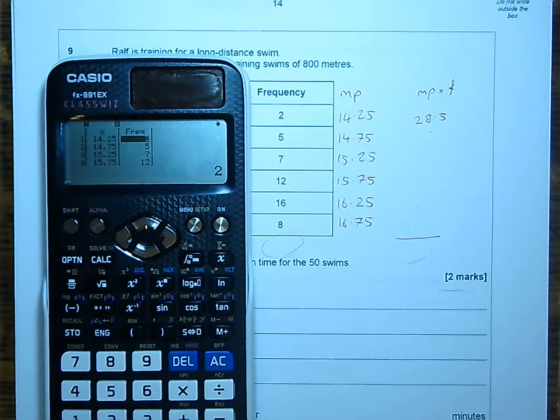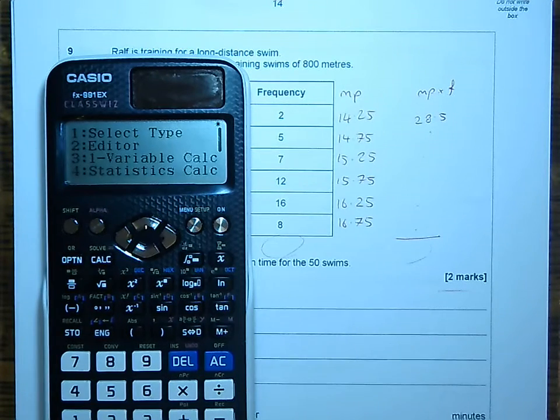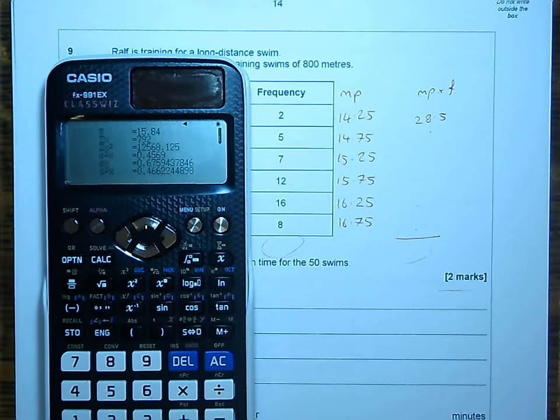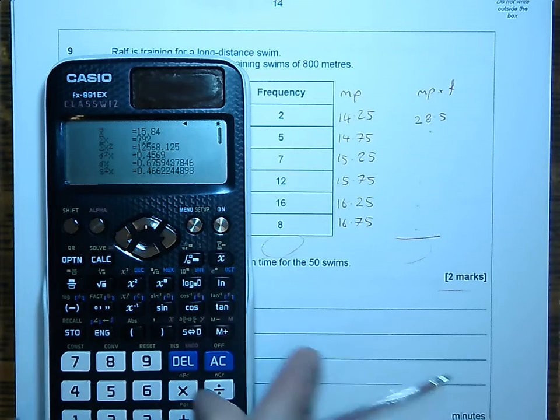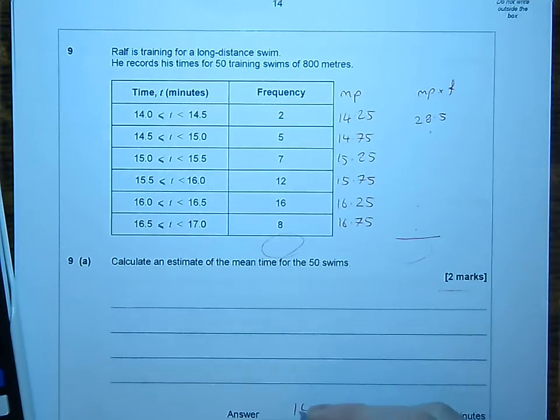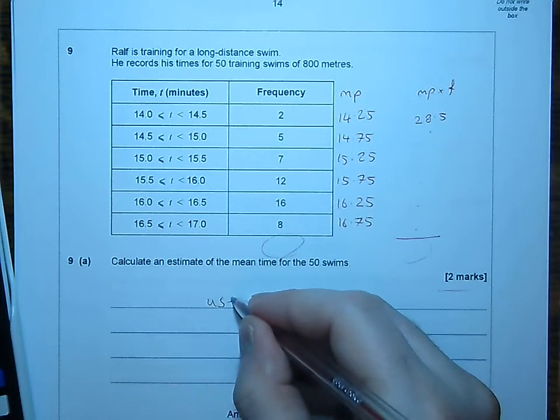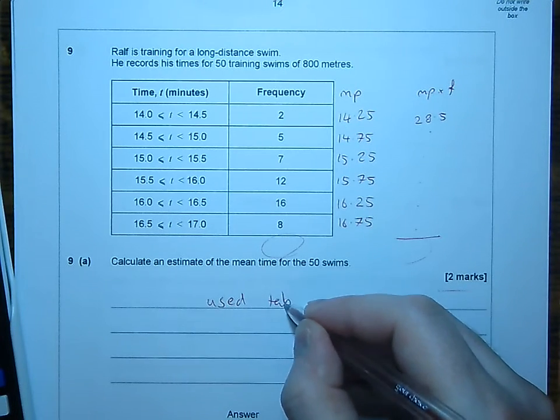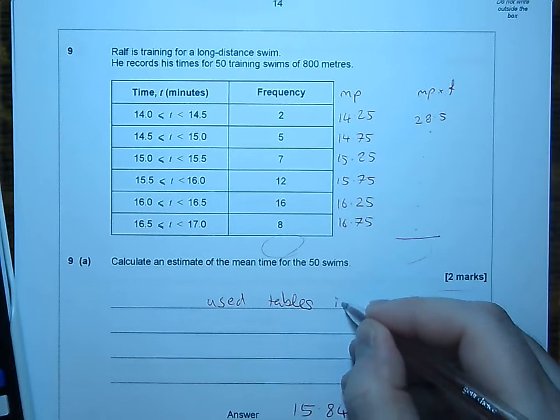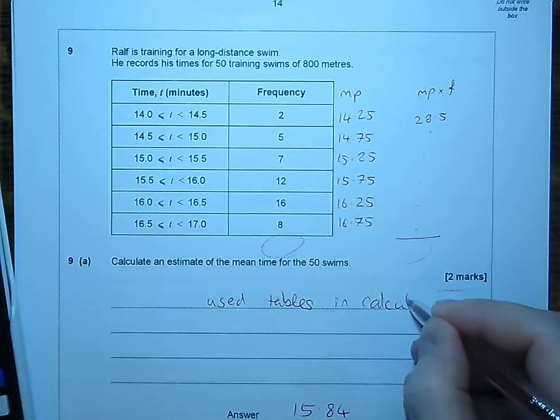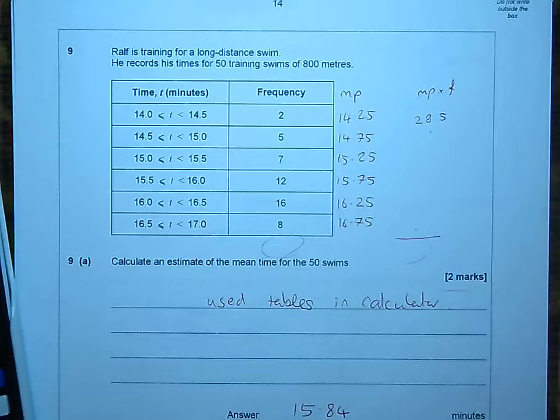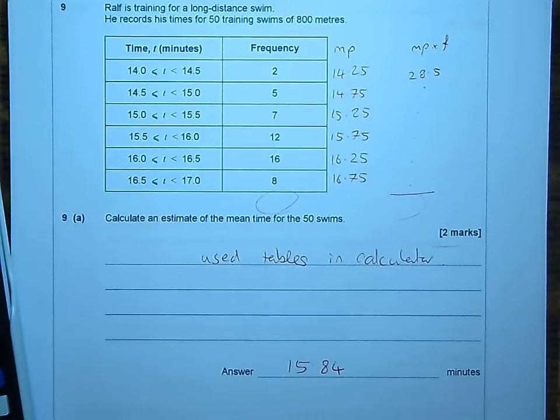But once I've got those data entered, if I hit option, and if I hit one variable calculations, three, the first thing it gives me is that x bar, that's the mean, is 15.84. Done. Two marks. Okay. Moving on.